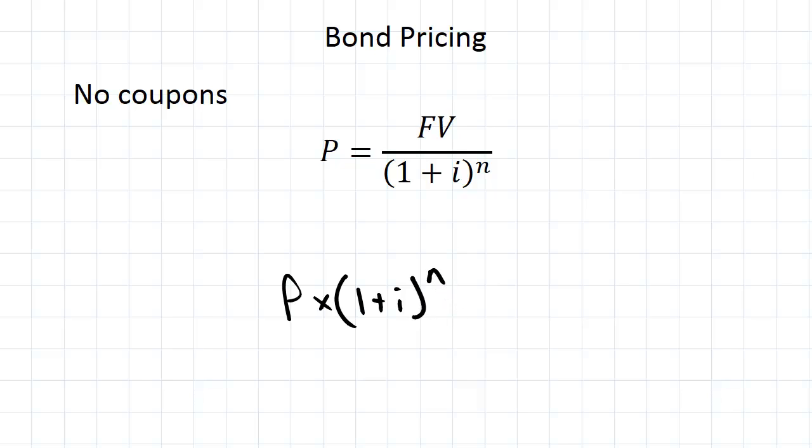We want to find the interest rate for which this investment is equivalent to investing it in a bond, and if we invest it in a bond then the amount we have after n years is just the face value. So we want this expression to be equal to face value.